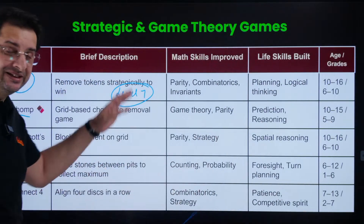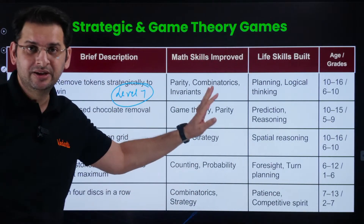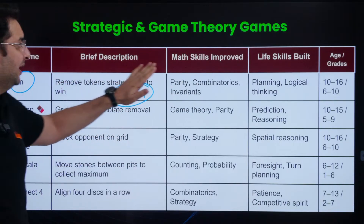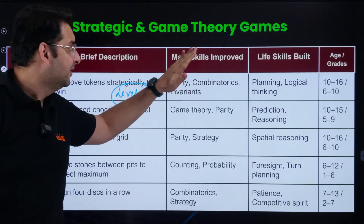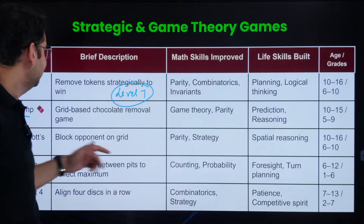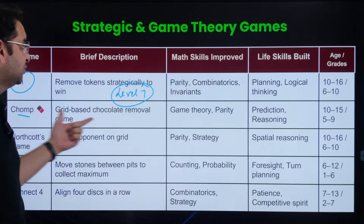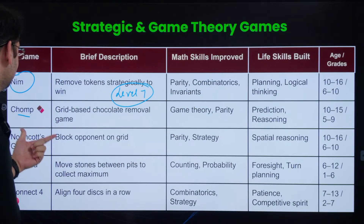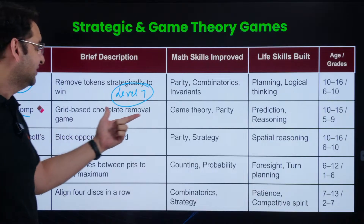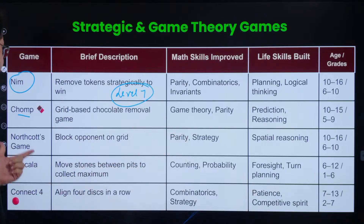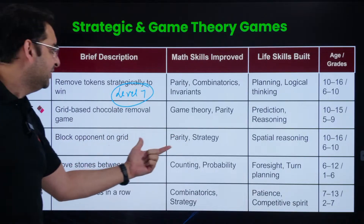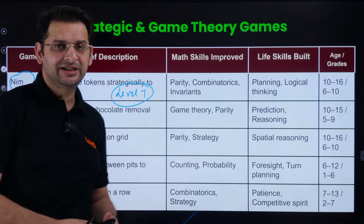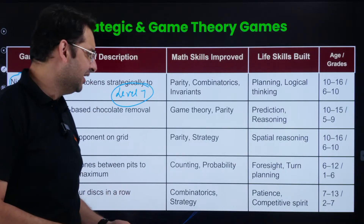These are strategy games — we play them a lot with our level 6 and level 7 students. NIM helps improve parity, combinatorics, and invariants. Game of Chomp covers game theory and parity. Northcott's game is parity and strategy. Mancala is counting and probability. And Connect 4 is combinatorics and strategy.